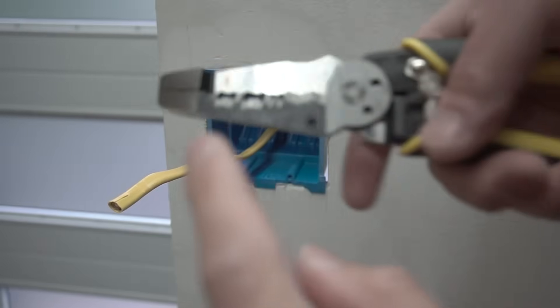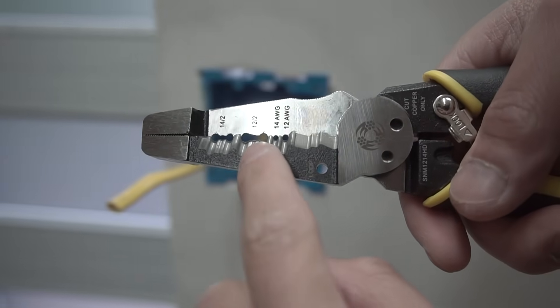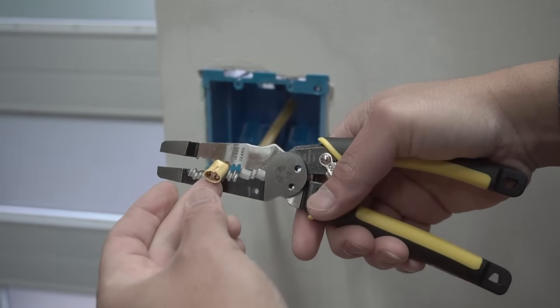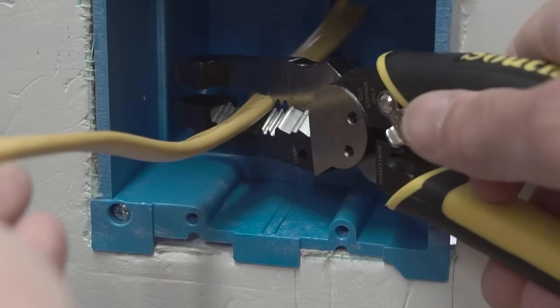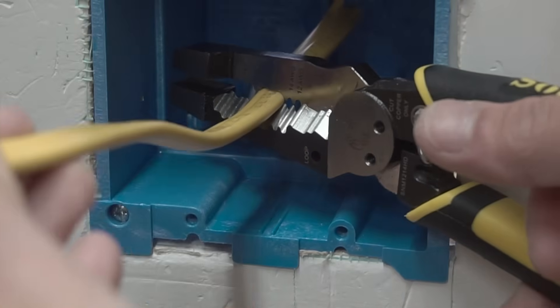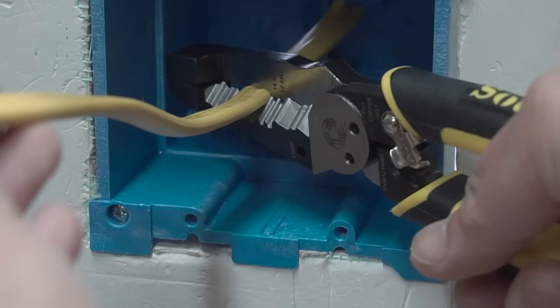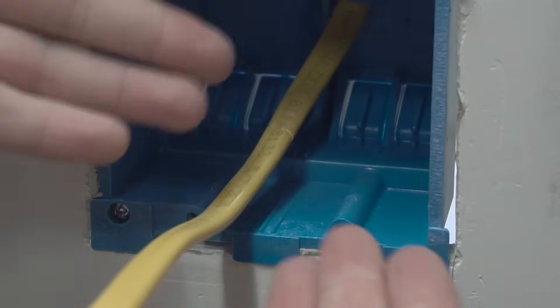Since this is a 12 gauge wire, we are going to be using the 12 gauge option right there which is going to fall just like this. And all you have to do is grasp it like that and just squeeze and let go. That's pretty much it.